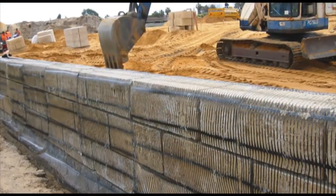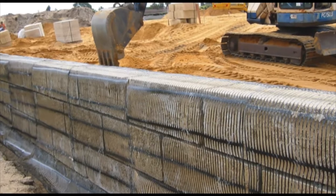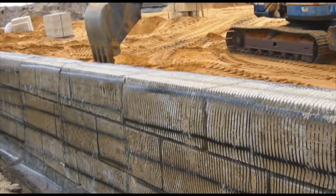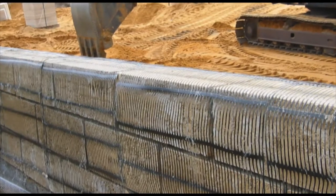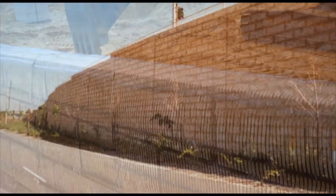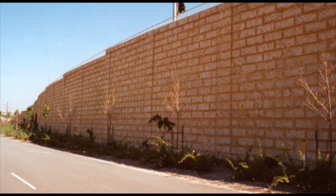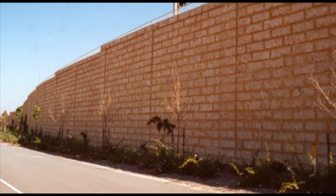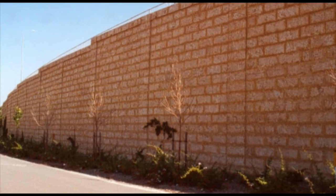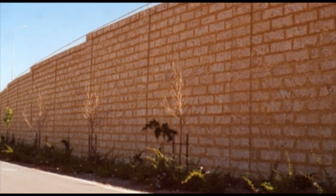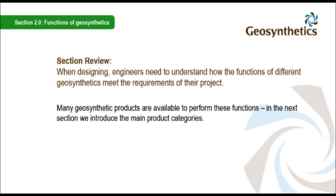Retaining walls commonly use geosynthetic reinforcing layers as they allow near-vertical faces to be built at reduced cost compared to the traditional manner of mass gravity structures — large, thick structures which remain in place through their heavy mass. When designing, engineers need to understand how the functions of different geosynthetics meet the requirements of their project.